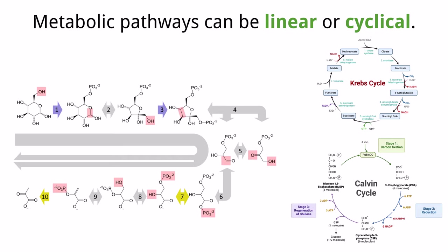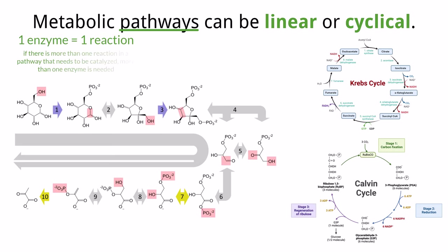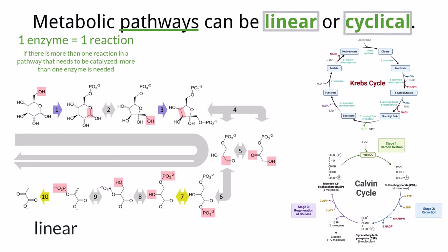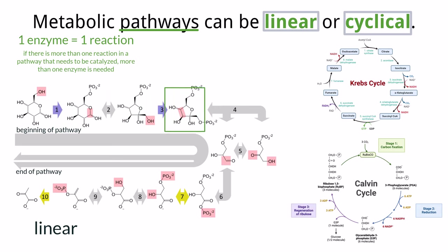Metabolism describes all of the chemical reactions taking place in the body, many of which are supported by enzymes. Many of these enzymes are part of a larger reaction pathway, because each individual enzyme can only support one specific chemical change. If there is a complicated multi-step chemical process that needs to happen, we need more than one enzyme to do the job. Each enzyme contributes one small part and change to the overall process, which we call the pathway. We can describe metabolic pathways as either linear or cyclical. For a linear pathway, a substrate is chemically changed in small increments by separate enzymes in a specific order until the final product is created.